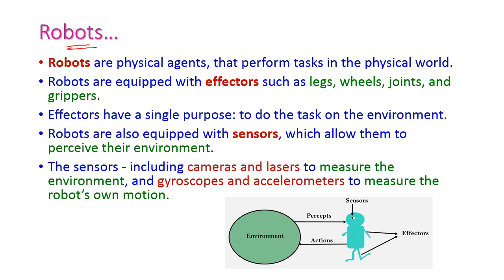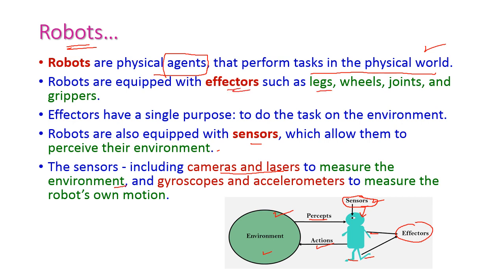Robots are physical agents that perform tasks in the physical world. In place of humans we can use robots. Robots have sensors by which they can perceive the environment, and they also have effectors which are used to perform actions on the environment. The sensors include cameras and lasers used to measure the environment, while effectors include legs, wheels, joints, and grippers. Apart from these, robots also have gyroscopes and accelerometers to measure the robot's own motion — how the robot moves from one place to another.